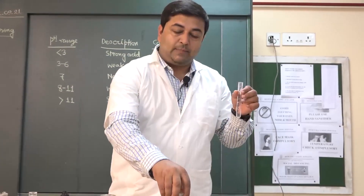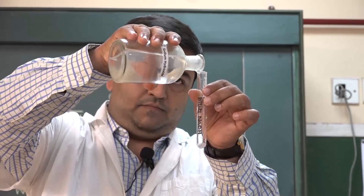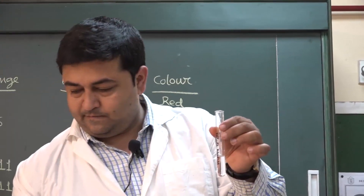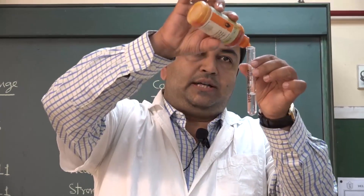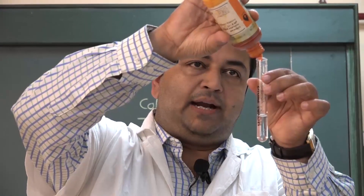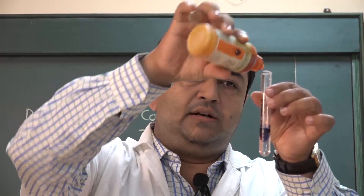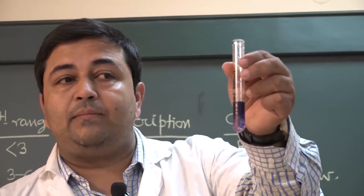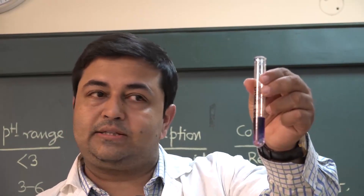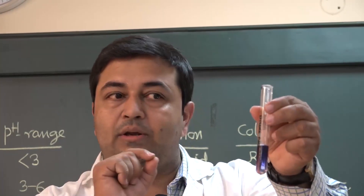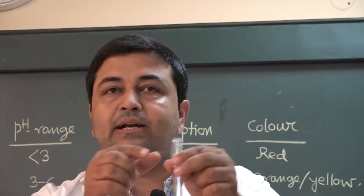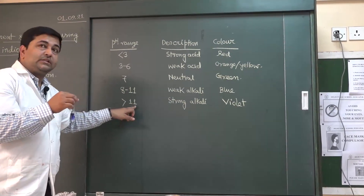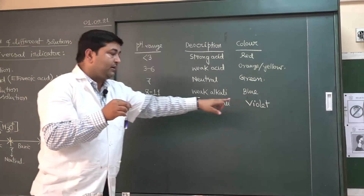Now I am taking sodium hydroxide into the test tube and checking its pH by adding one to two drops of universal indicator. The color becomes violet. When the solution becomes violet after adding the universal indicator, it means it is a strong alkali with pH more than 11.